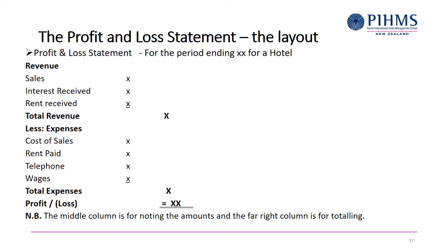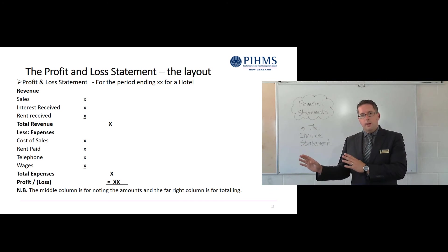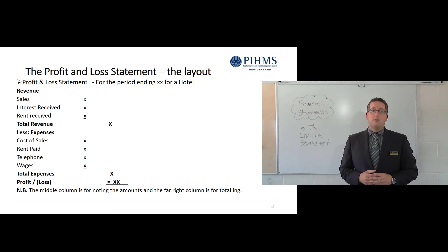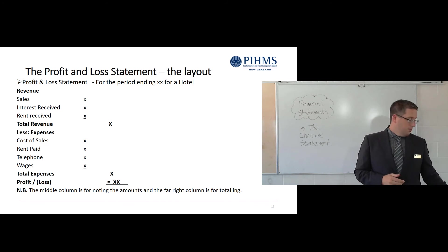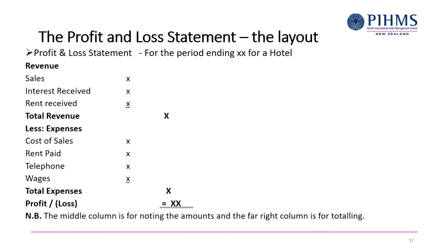Then do the exact same thing for expenses. Go through and grab all your expense items — cost of sales, rent paid, telephone, wages — all the ones marked with an E. List them all out with numbers in the left-hand column, then total the expenses, which goes in the right-hand column as one number: total expenses.